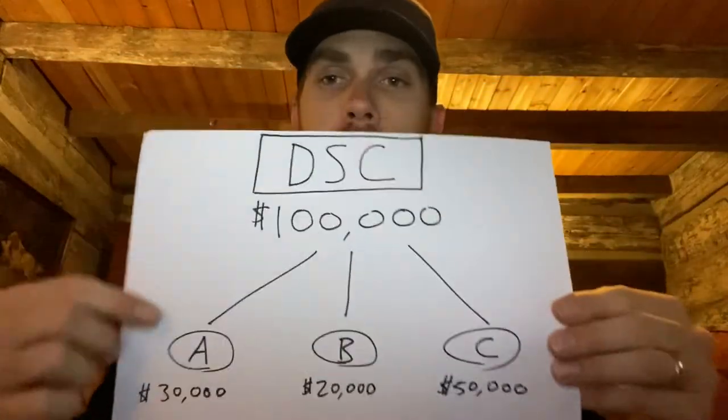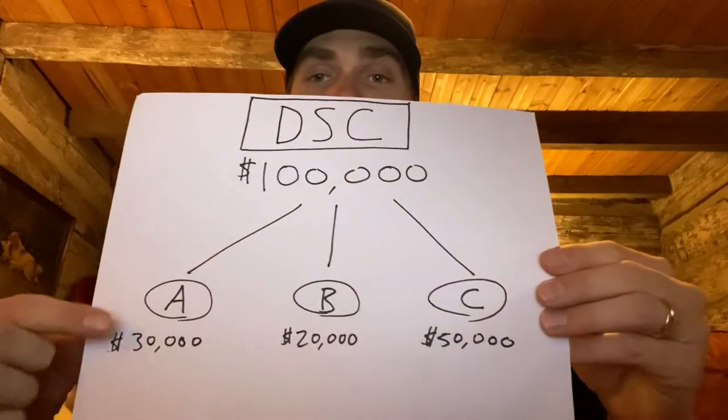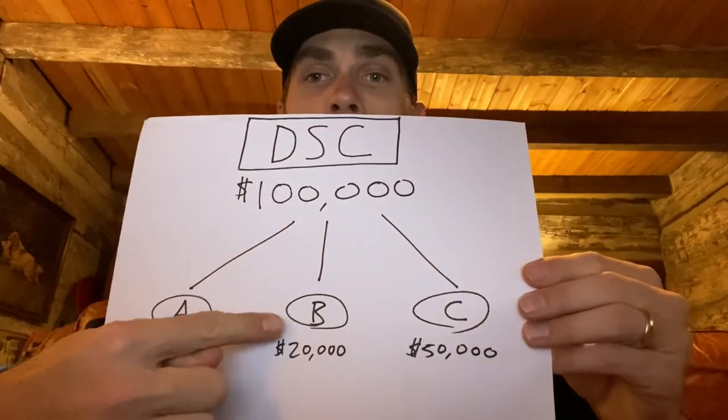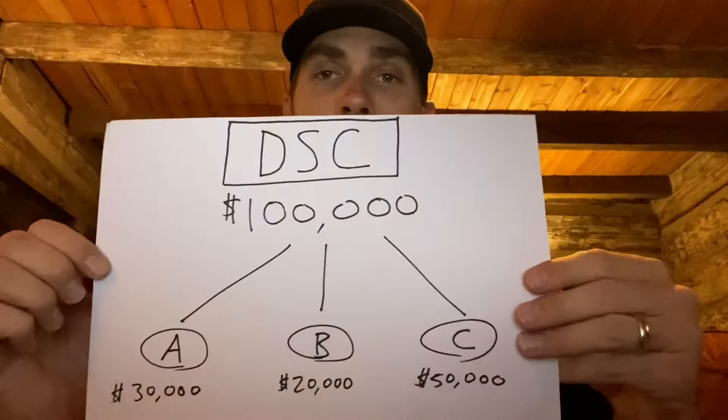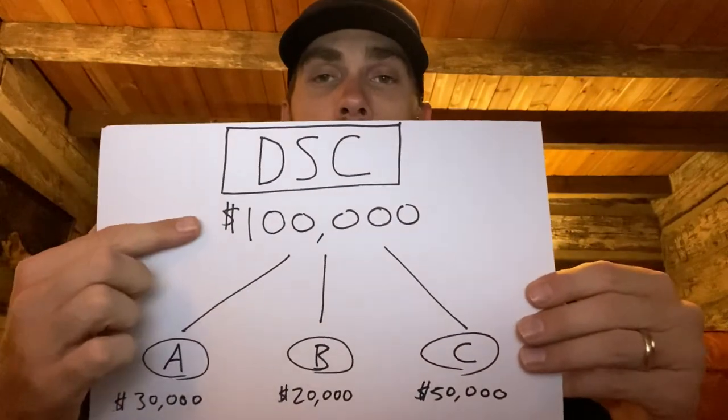He's got three investors: Investor A gives him $30,000, Investor B gives him $20,000, and Investor C gives him $50,000. That adds up to $100,000, which is the amount Dan is trying to raise. This is why companies sell stock — to make the money they need to do things with the company, and ultimately to make their company more valuable.